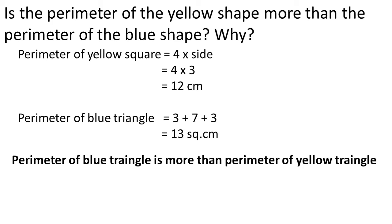There was a yellow square and a blue triangle. We found the area of both figures. Now we shall find out the perimeter of both figures. Perimeter of yellow square is equal to 4 into side — we know the formula to find out the perimeter of a square. Side is 3 centimeter, so 4 into 3 is equal to 12 centimeter. Perimeter of yellow square is 12 centimeter.